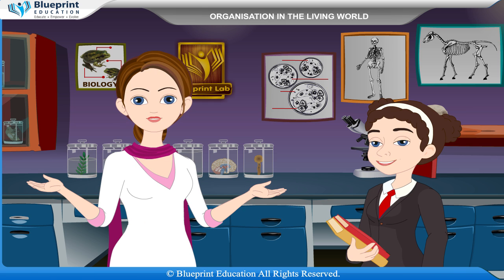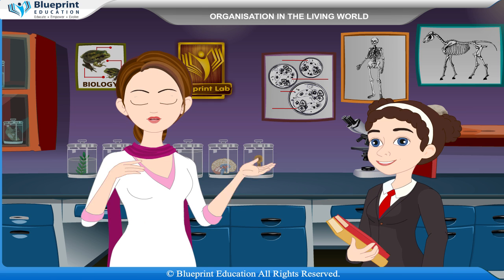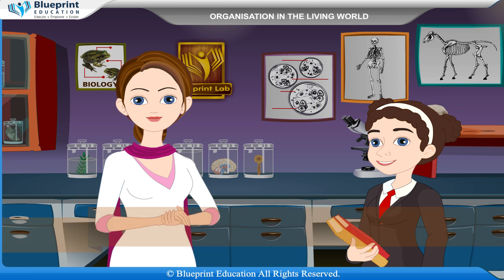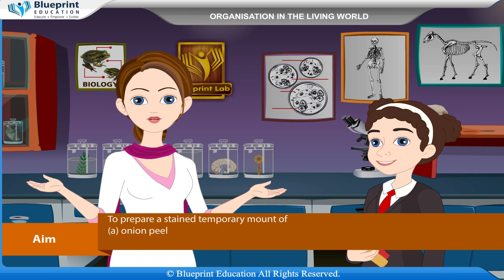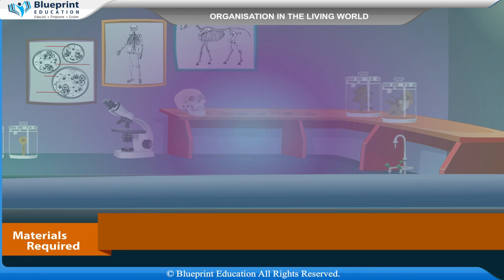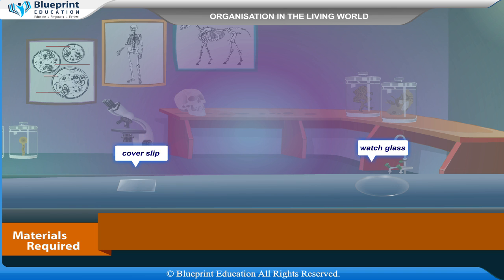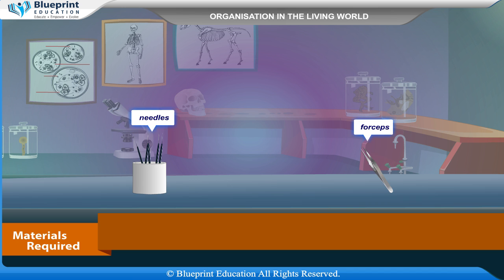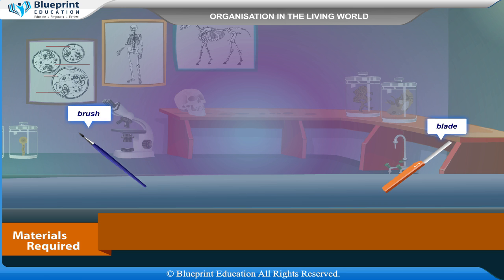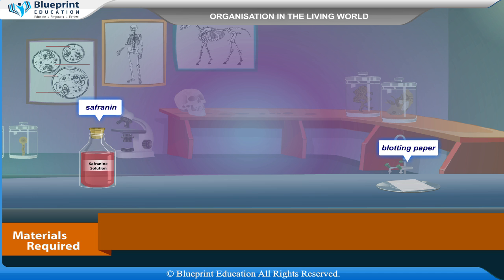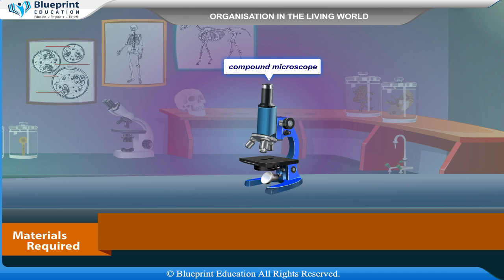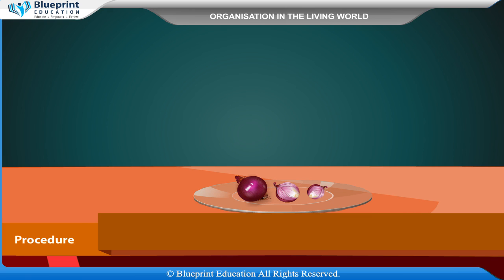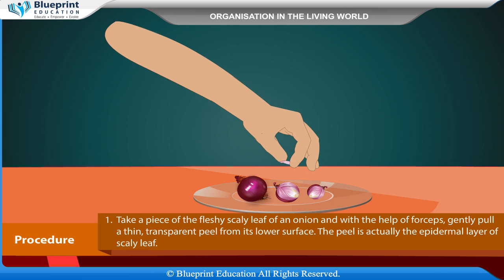Let's do an experiment to prepare a stained temporary mount of onion peel and human cheek cells. Materials required are: onion, plain slides, cover slip, watch glass, needles, forceps, brush, blade, safranin, blotting paper, distilled water, glycerine, and a compound microscope.